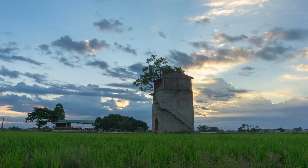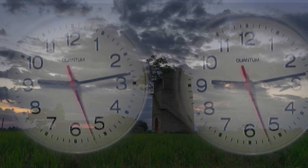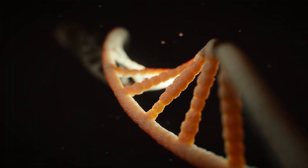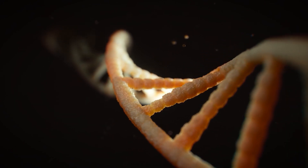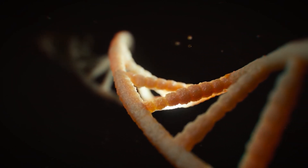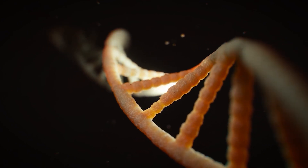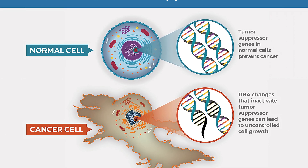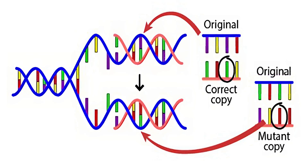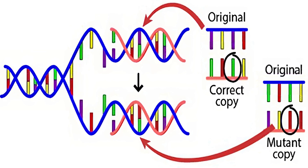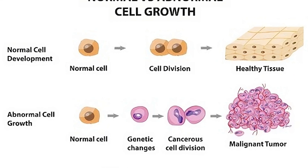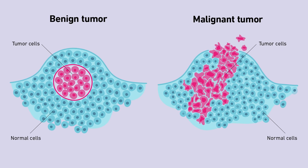Cancer development is a multi-step process that can sometimes take years or even decades to occur. It typically starts with a genetic mutation or other alteration in a cell's DNA that causes the cell to begin dividing and growing uncontrollably. Usually, the body has mechanisms in place to detect and repair DNA damage and replace old cells. However, in some cases, mutations can occur that bypass these mechanisms, allowing abnormal or damaged cells to continue dividing and growing when they shouldn't.